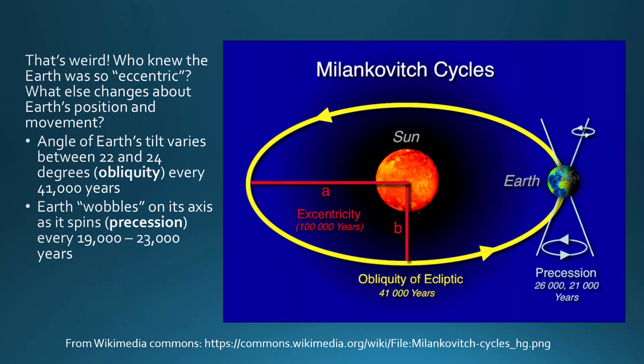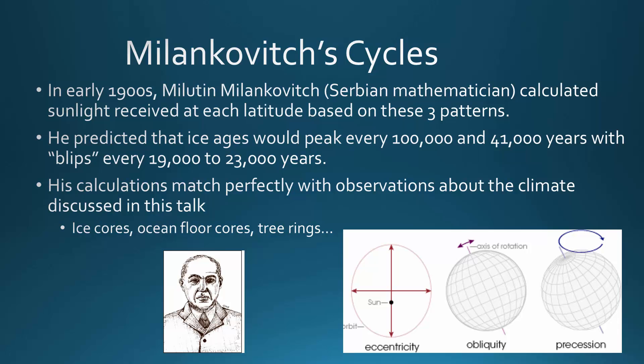So there are three things going on, all causing changes in the amount of solar radiation reaching Earth. A scientist named Milutin Milankovic, a Serbian mathematician, took all of these observations and in the early 1900s — before computers — calculated the amount of sunlight received at each latitude based on these three distinct patterns of Earth's orientation to the Sun. From this, he predicted that ice ages would peak every 100,000 years, every 40,000 years, and with blips every 19,000 to 23,000 years — coinciding with eccentricity, obliquity, and precession.